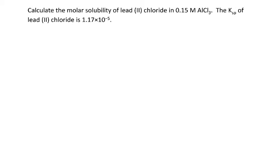The first thing I need to do is build my ICE table. I have lead(II) chloride dissociating into lead(II) ions and two chloride ions. My initial lead is still zero, but now I need to figure out what my initial chloride ion concentration is.